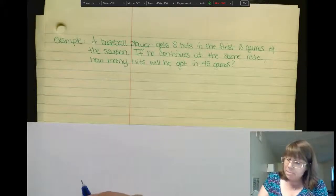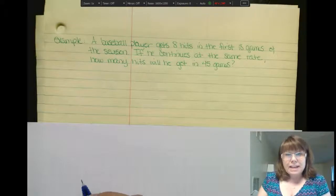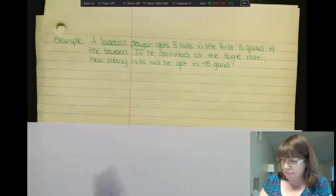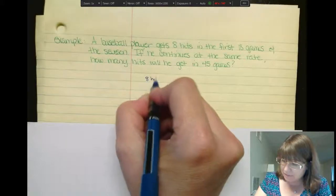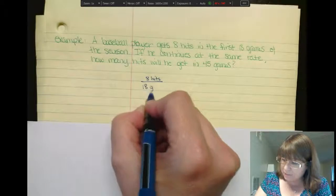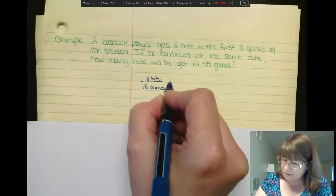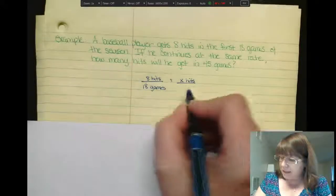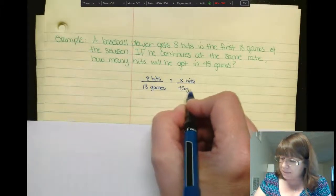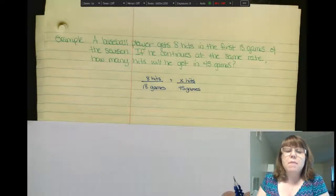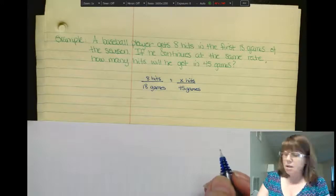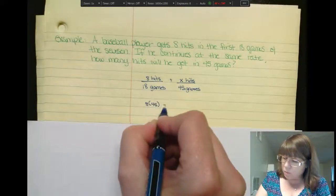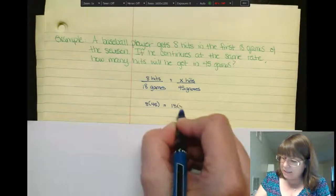So let's take another example. A baseball player gets 8 hits in the first 18 games of the season. If he continues at the same rate, how many hits should he get in 45 games? So he gets 8 hits in 18 games. How many hits, we don't know, so that's our x. Let's use our fundamental proportioned principle to solve for our x. So we have 8 times 45 will equal 18 times x. Well, 8 times 45 is going to be 360 equals 18x.